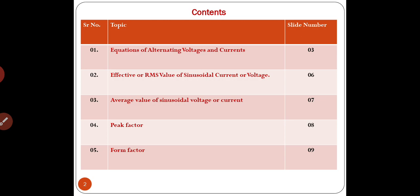For average value of sinusoidal voltage or current, we will find out what the average value is for different currents in a particular circuit. Then we will understand about peak factor and form factor, which are the ratios of two quantities.